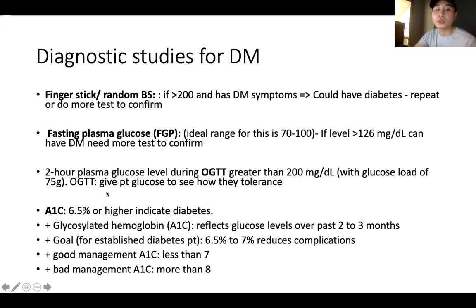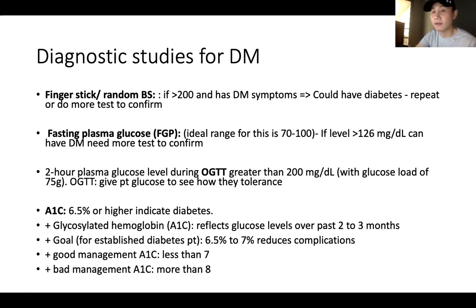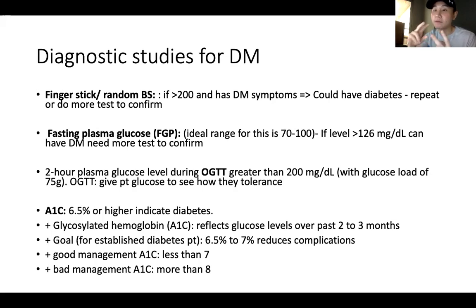Next, the two-hour plasma glucose level, also called the oral glucose tolerance test (OGTT). If it's greater than 200, the patient may have diabetes. For this test, we give the patient 75 grams of carbohydrates or glucose. After two hours, we recheck the blood sugar. If it's more than 200, that means they are suspected of having diabetes mellitus.